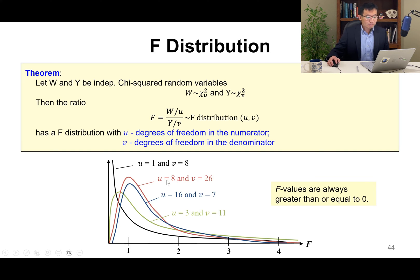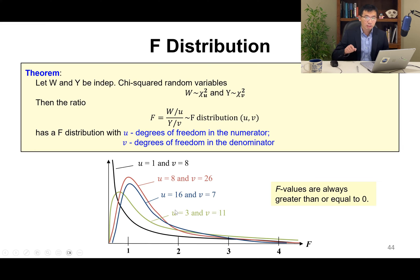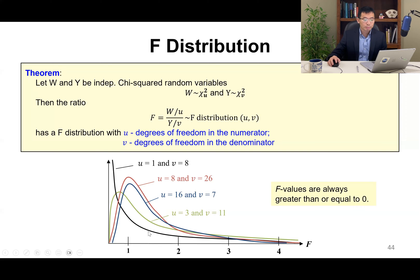The F distribution is also a family of distributions. If U and V are different — for example (1, 8) or (8, 26) — you get a different distribution. So if you change the degrees of freedom in the numerator or denominator, you will also change the F distribution.